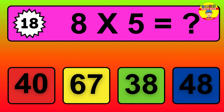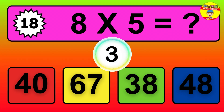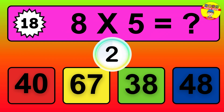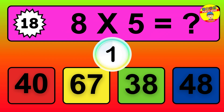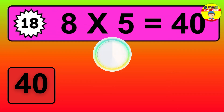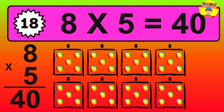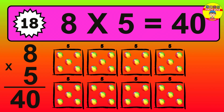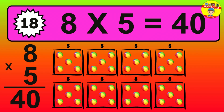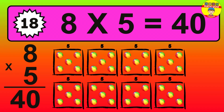Question 18. 8 times 5 equals what? The answer is 8 times 5 is 40. To calculate, we have 8 groups with 5 balls each one. So, how many balls do we have? 40 balls.